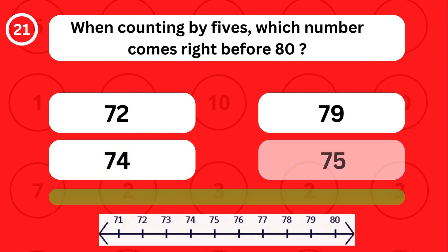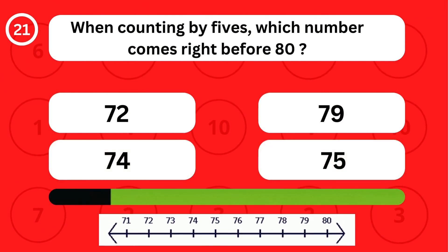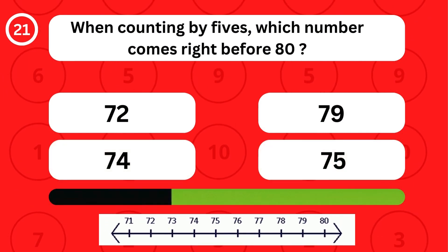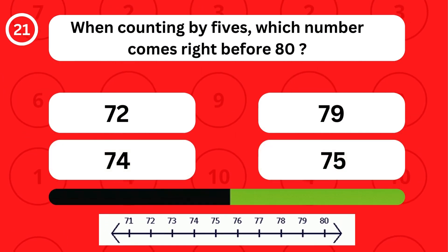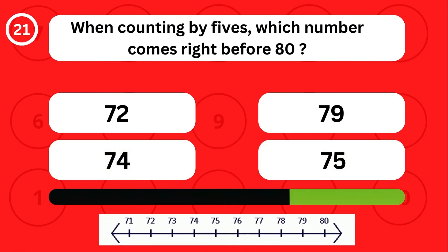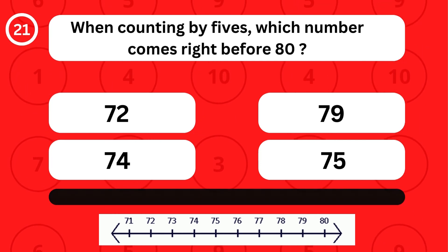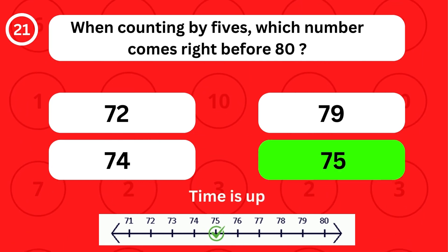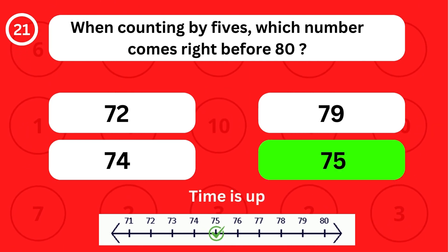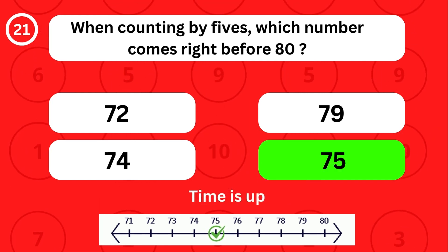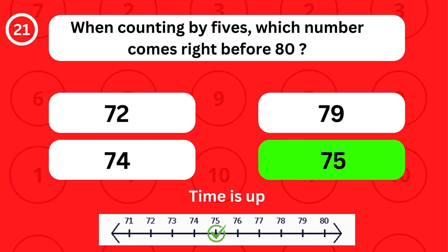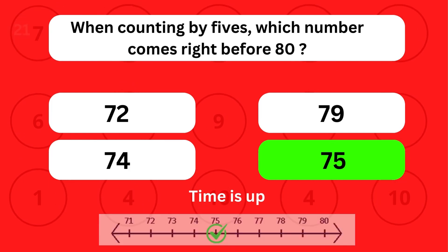When counting by fives, which number comes right before 80? When counting by fives, the number 75 comes right before 80.